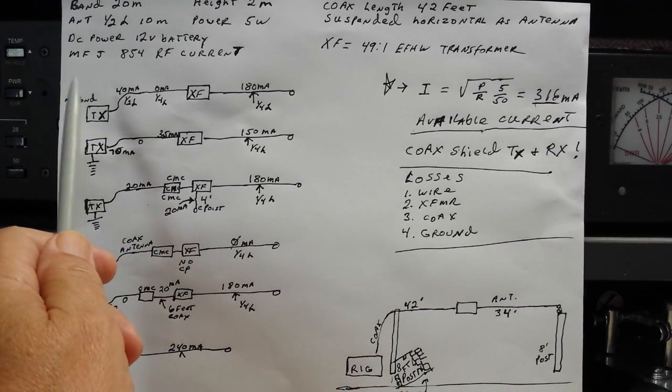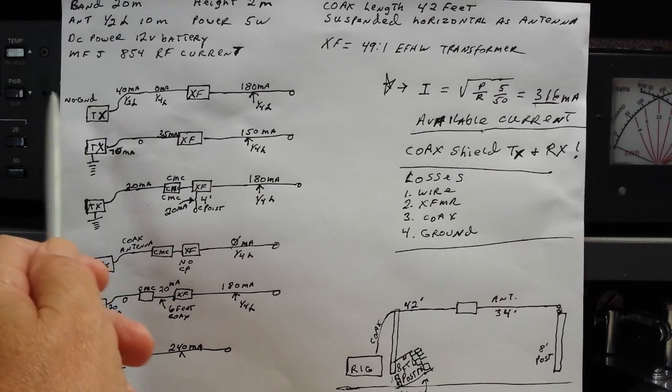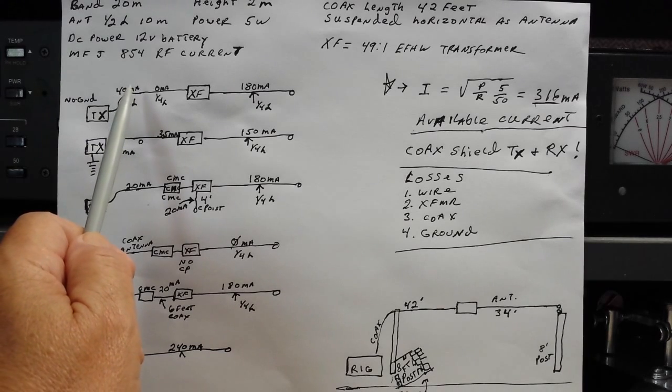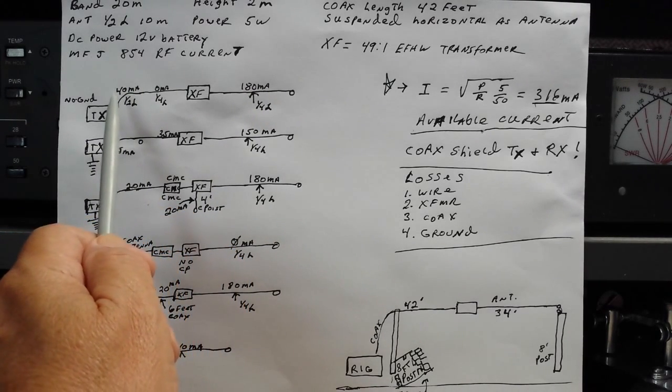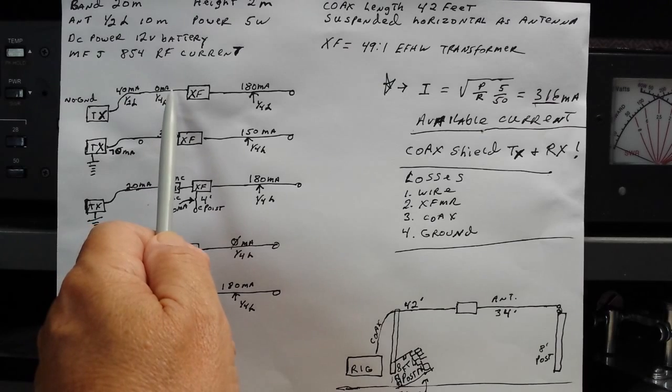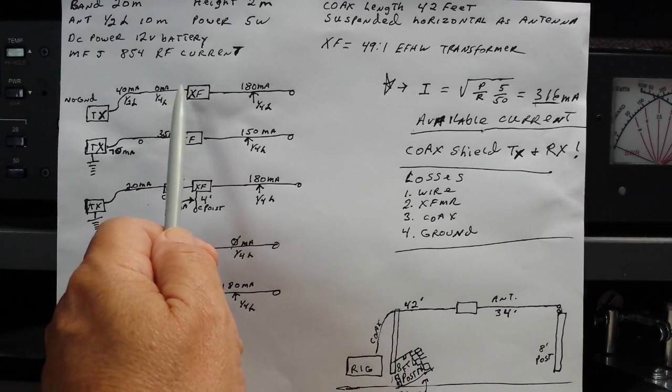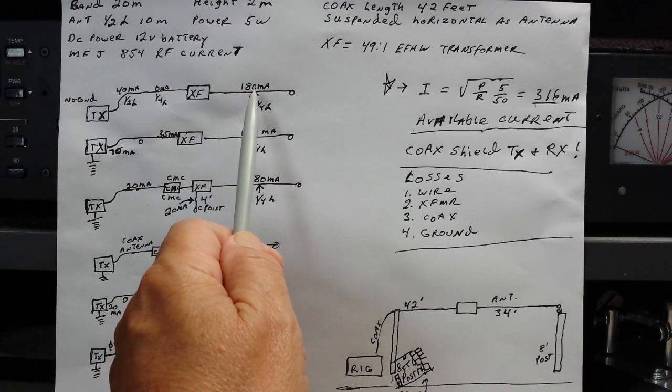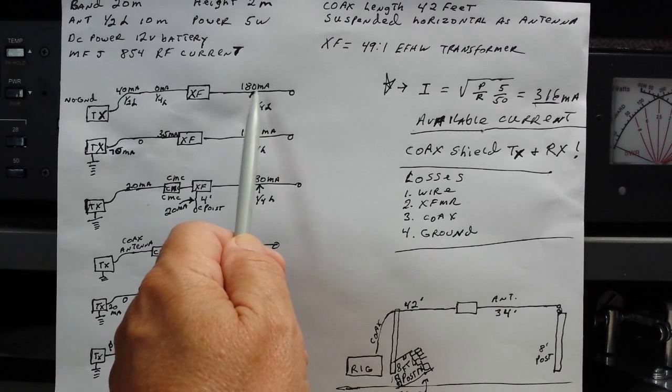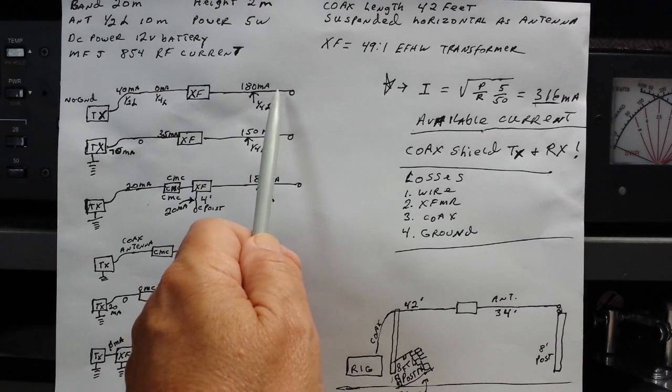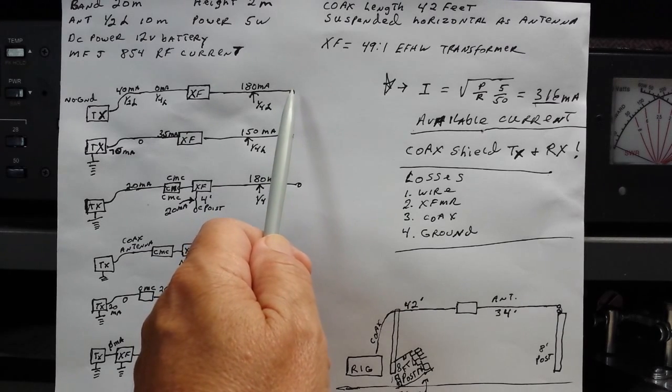In our first test we applied five watts as we did in all these tests to the end of the coax and we measured the current along the way and down close to the rig we measured 40 milliamps of current and then as we moved along toward the transformer it dropped to zero and then on the other side of the transformer it started out very low and then went up to 180 milliamps maximum in the center or at the quarter wave point and then back down to very low at the end. As it should.